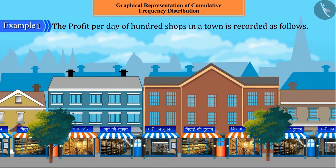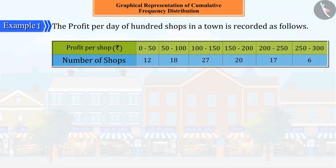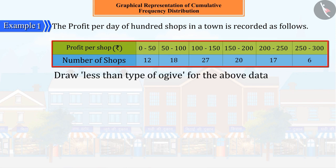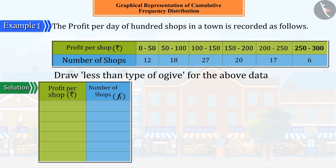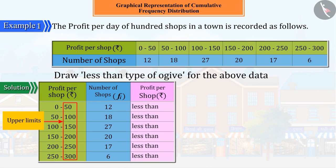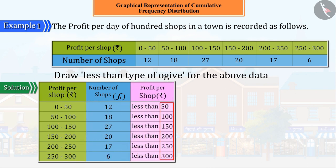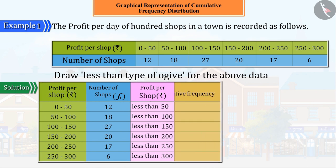The per day profit of 100 shops in a town is recorded as follows. Can you draw a less than type of ogive for the above data? Let's see. We know that to get the ogive in the given distribution, we need to create the cumulative frequency distribution for less than type of ogive.